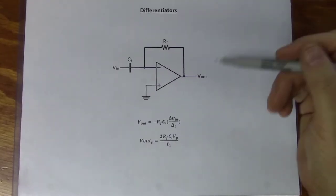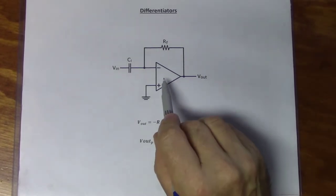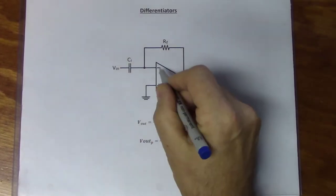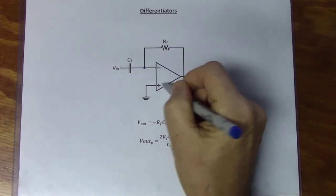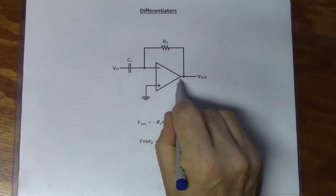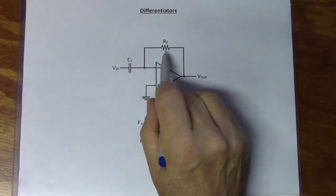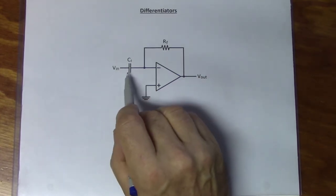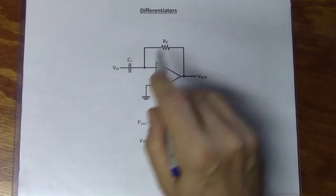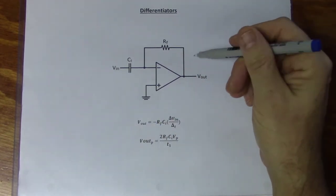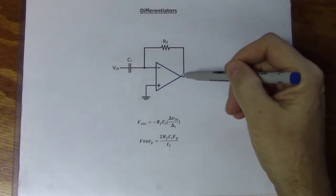We'll start our analysis by looking at an ideal differentiator, using an ideal op-amp, which means we have infinite impedance on our inverting and non-inverting inputs, zero impedance on the output, and everything works perfectly. We're going to use just two components: a capacitor at the input and a feedback resistor. A practical differentiator will need a few more parts to function properly and efficiently, and we'll talk about that shortly.